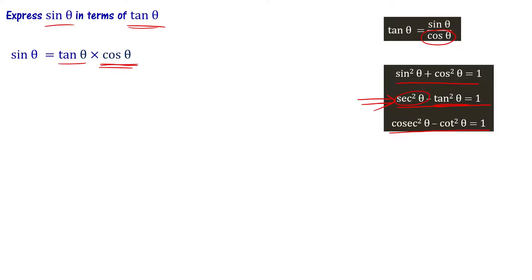Cos theta equals 1 by sec theta. So we get tan theta times cos theta, which is tan theta by sec theta.